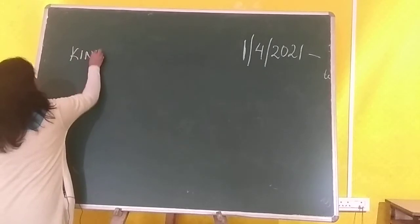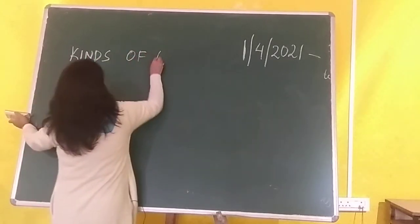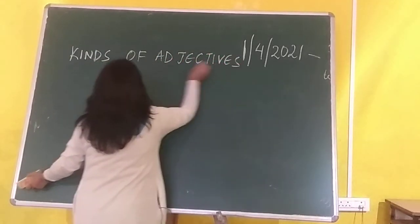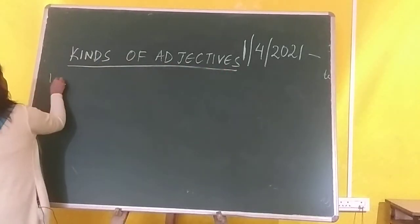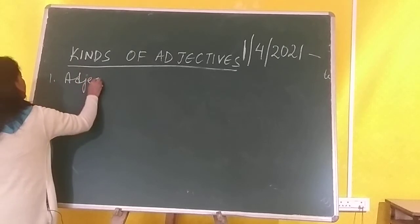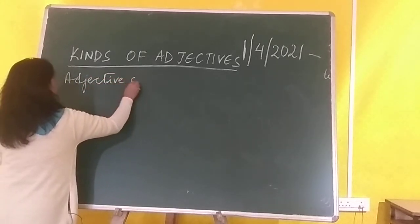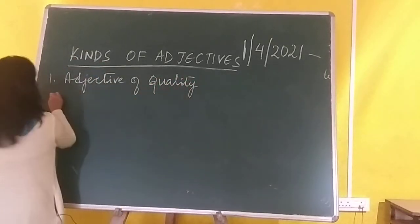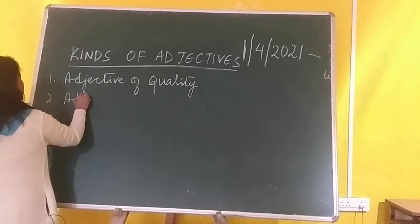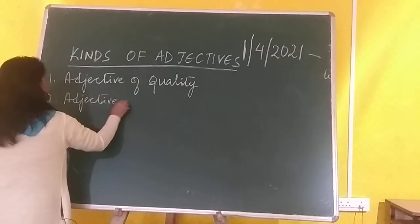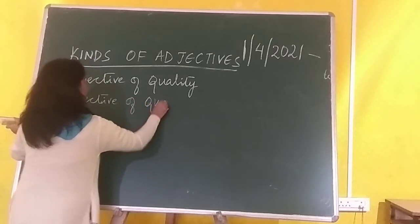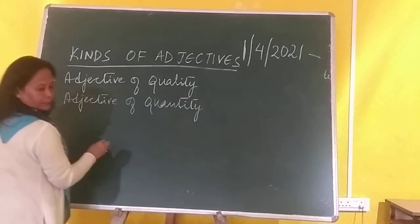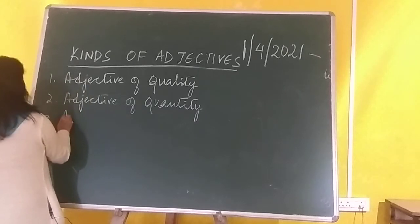So the six kinds of adjectives include adjective of quality, adjective of quantity, and others. Number one is adjective of quality. Number two is adjective of quantity.